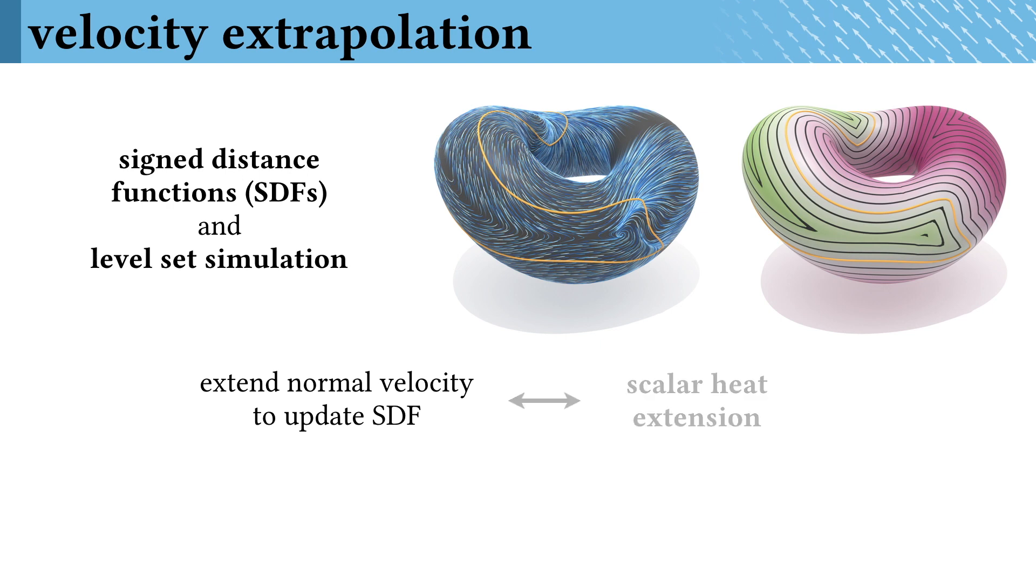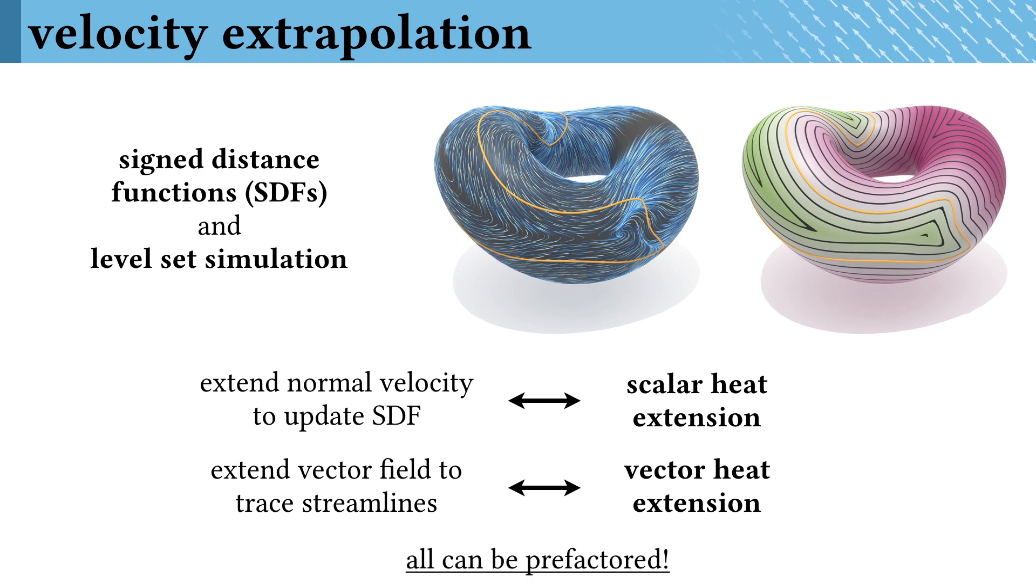If you just want the normal component of your velocity, you can extend it using our scalar interpolation scheme, while the full vector heat method can transport all the components of a vector. This works on both flat and curved domains, and all the relevant matrices can be prefactored even as the interface location is moving.